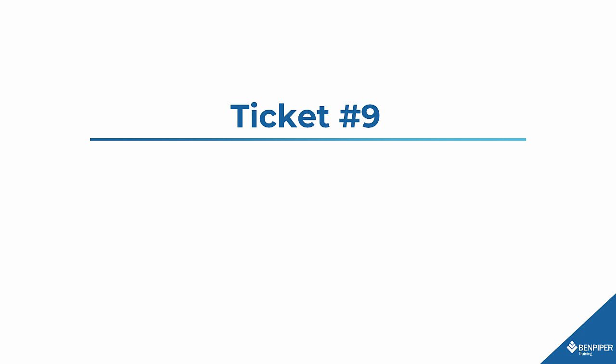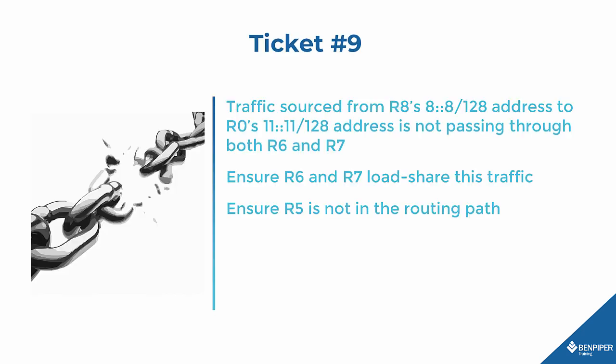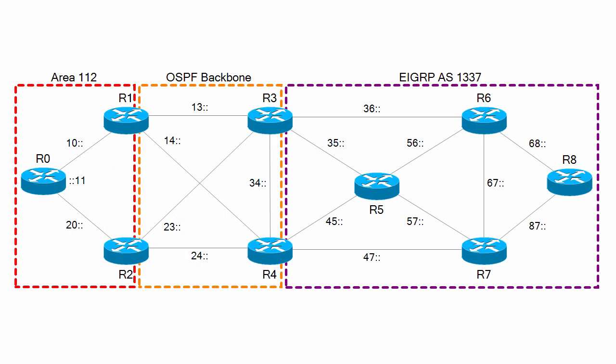Two more to go. Ticket 9: Traffic sourced from R8's 8::8/128 address to R0's 11::11 address is not passing through both R6 and R7. Ensure R6 and R7 load share this traffic. Ensure R5 is not in the routing path. This is a lot more complex sounding than the other tickets. Let's take a look at the layer 3 diagram. The ticket says traffic from R8's 8::8/128 loopback going to R0's loopback is not passing through both R6 and R7. Our mission is to ensure R6 and R7 load share this traffic, and that R5 is not in the routing path.